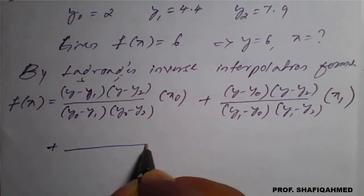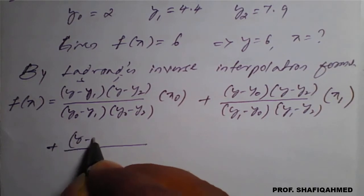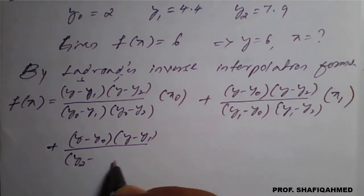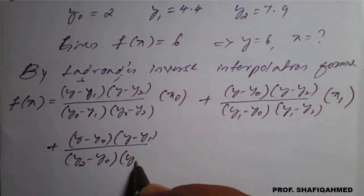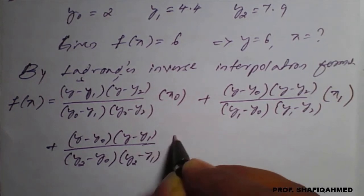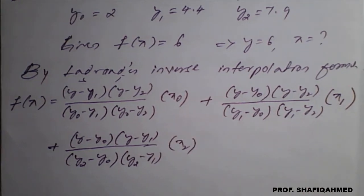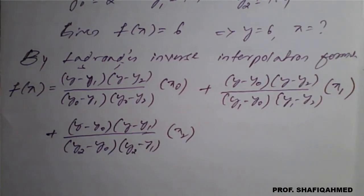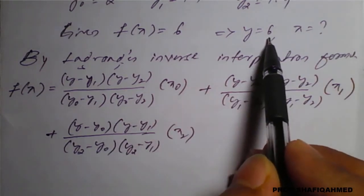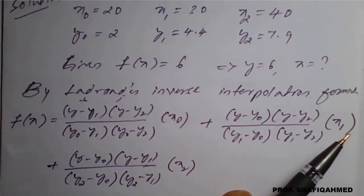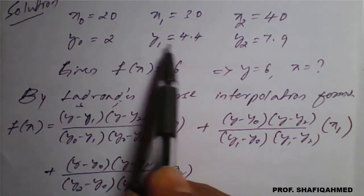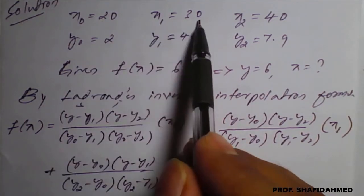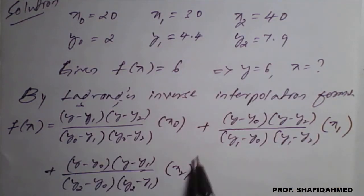Plus the next term: y minus y naught times y minus y1, divided by y2 minus y naught times y2 minus y1, into x2. We have x naught, x1, x2 and y naught, y1, y2 — so we stop here. We know the value of y is 6, y naught is 2, y1 is 4.4, y2 is 7.9, x naught is 20, x1 is 30, x2 is 40. We will apply these values.